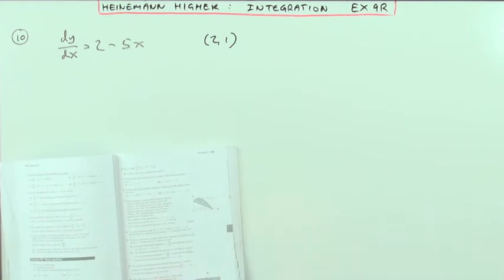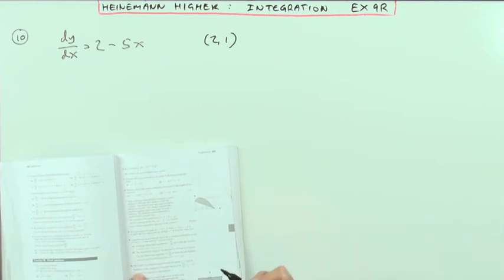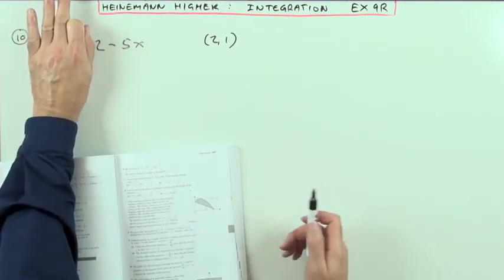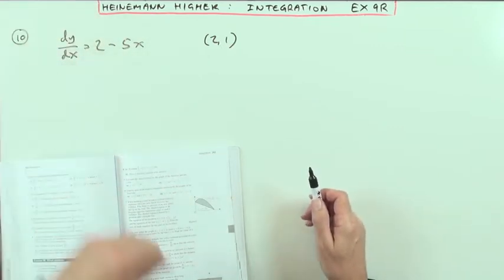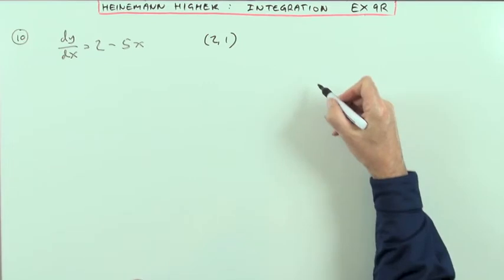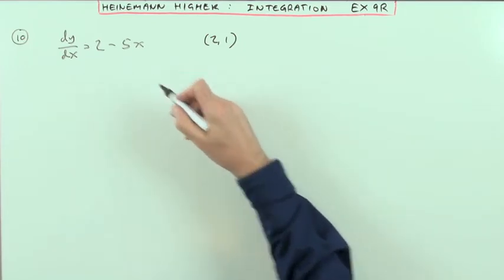The graph of a function passes through the point (2, 1), and the gradients of the tangents are given by dy/dx = 2 - 5x. You have to find the actual equation of the function.